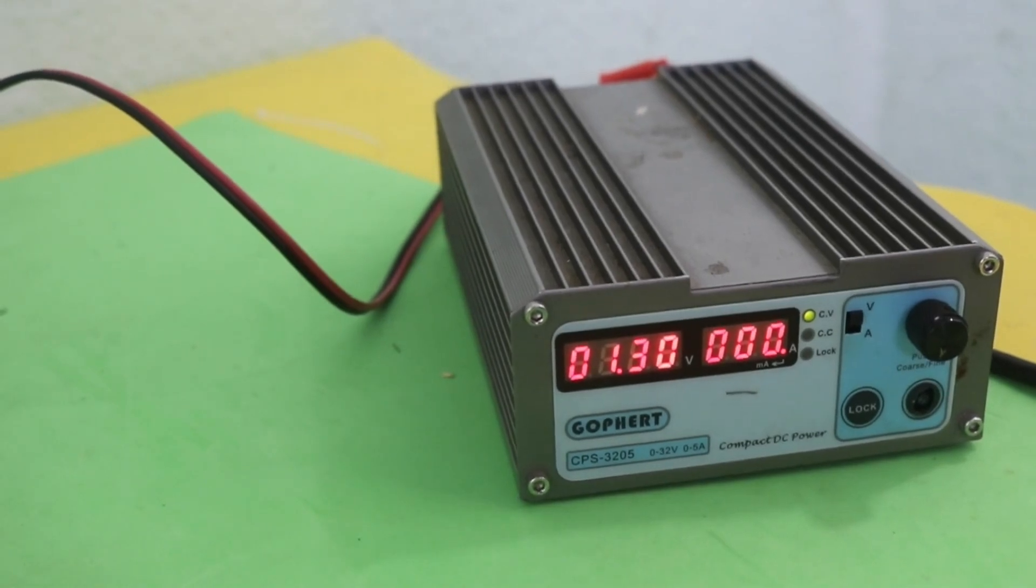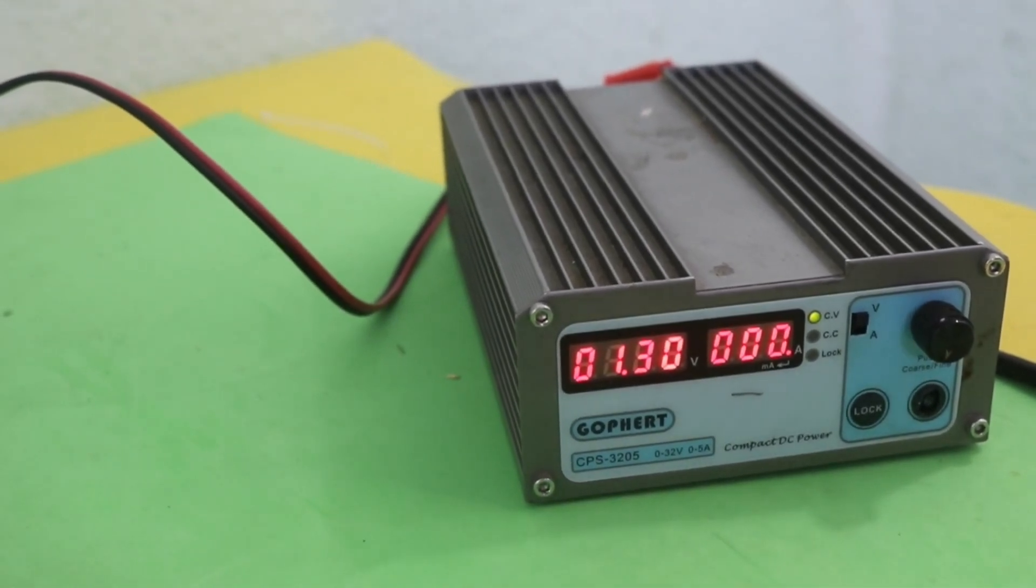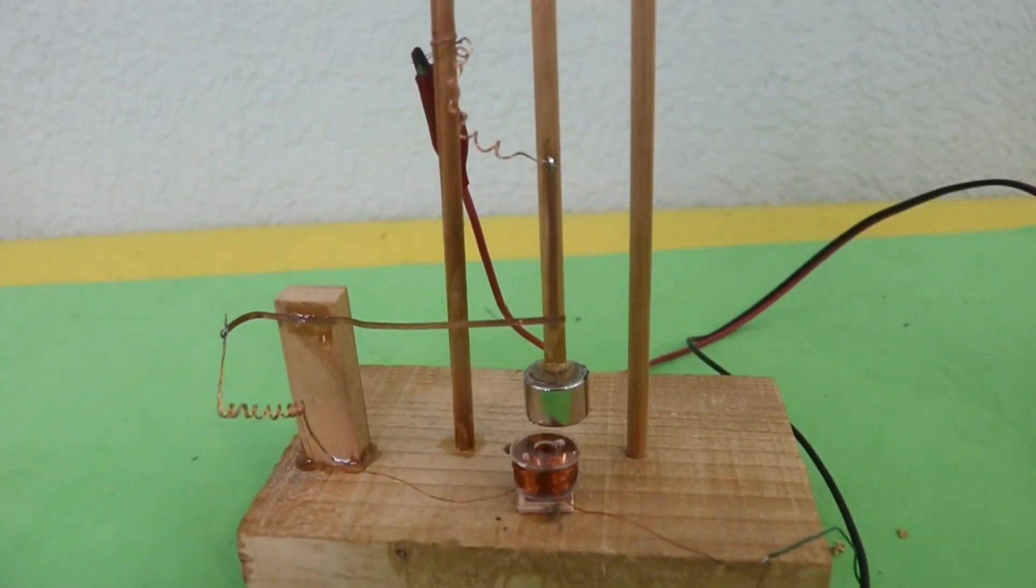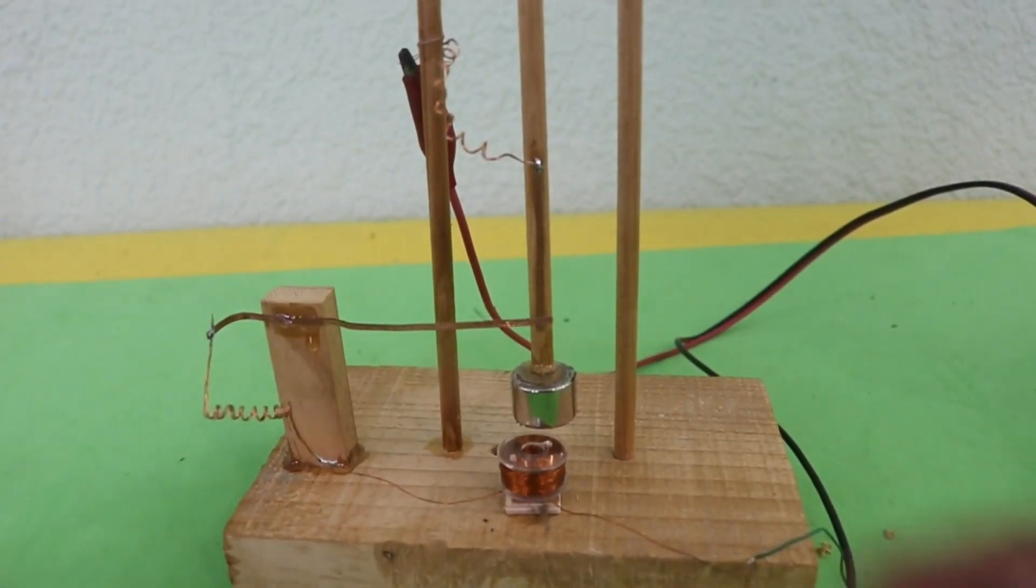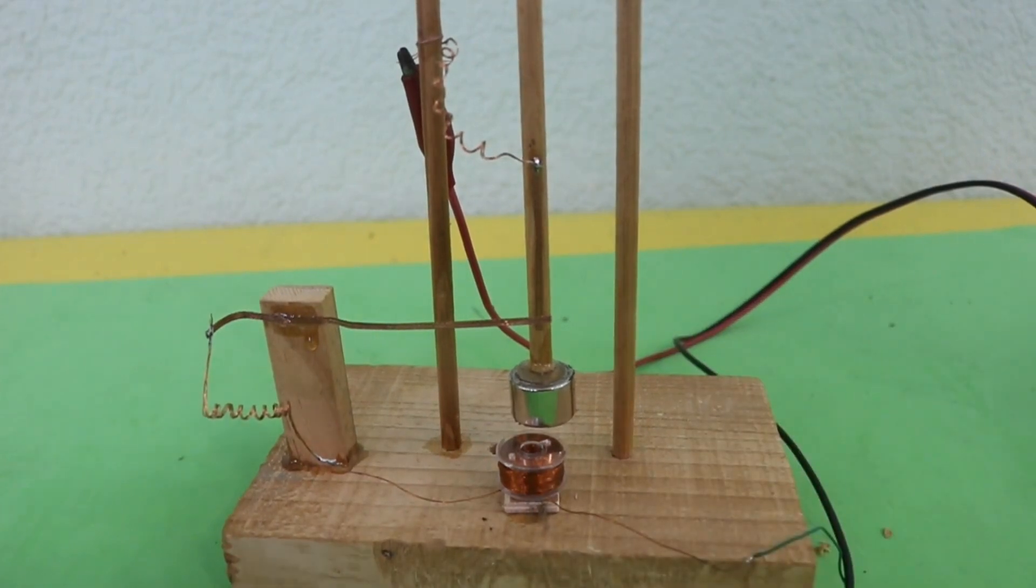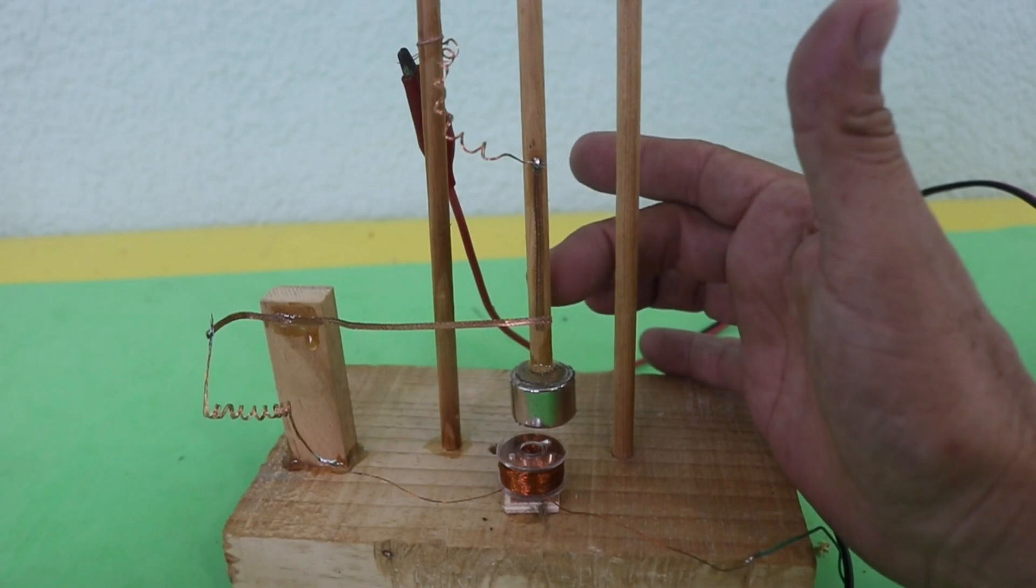Okay, I'm going to apply just 1.3 volts to the coil and the pendulum. The pendulum is now at rest, there is no contact. So let me give it an initial push to put it in motion.